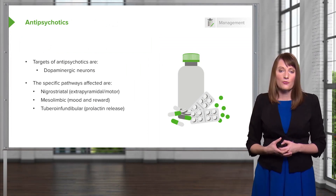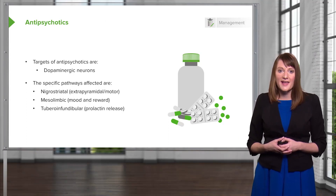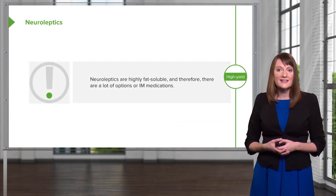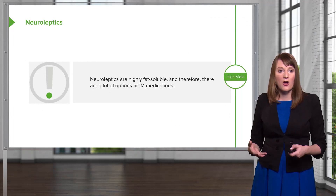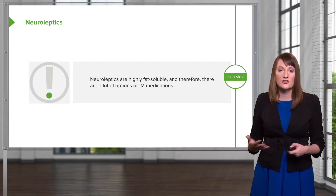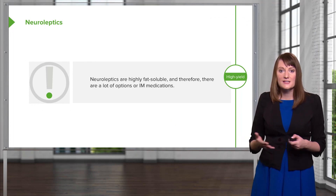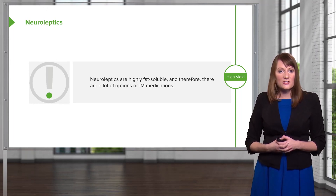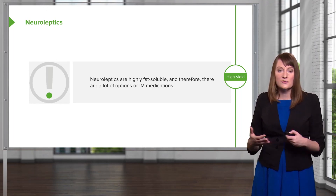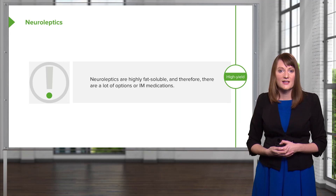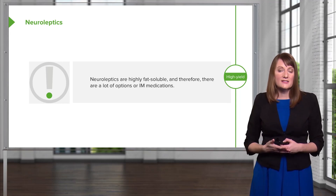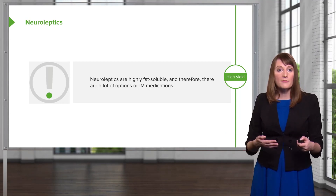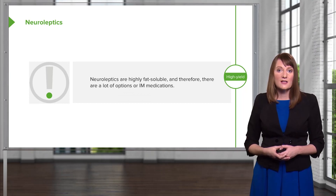There are a few different dopamine pathways you should be familiar with: the nigrostriatal, the mesolimbic, and the tuberoinfundibular. Neuroleptics are highly fat soluble, and therefore there are a lot of options for giving these intramuscularly or through injection. When patients are very agitated in the hospital setting, it's really nice to have the option of an injection. Also, long-acting injectable antipsychotics allow for bimonthly or monthly dosing, which can be a nice option for patients.